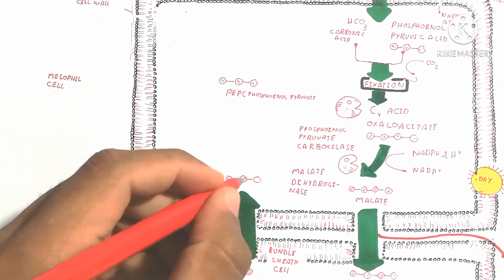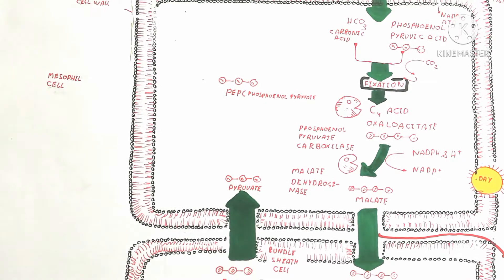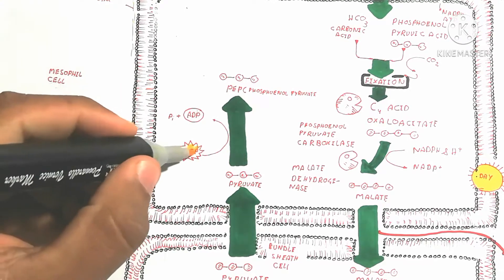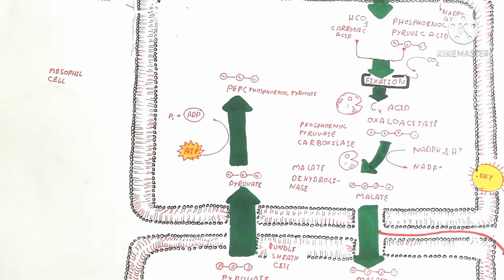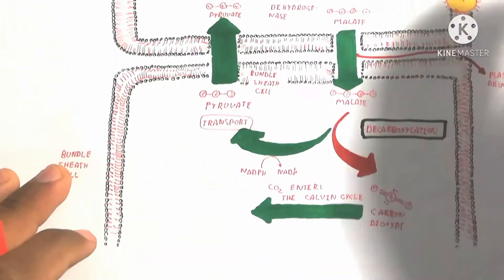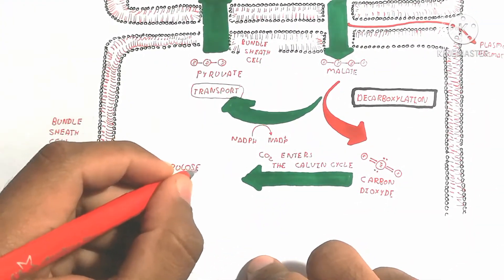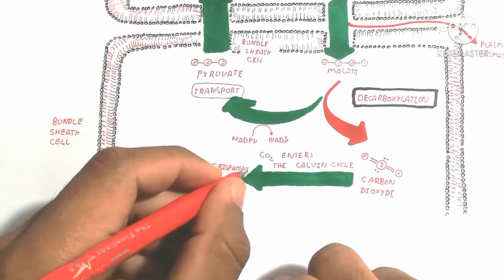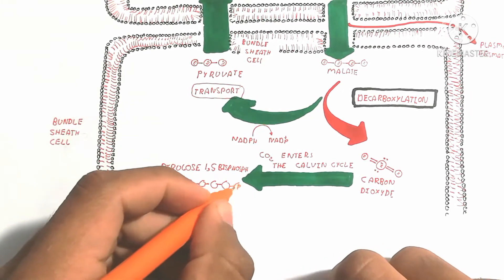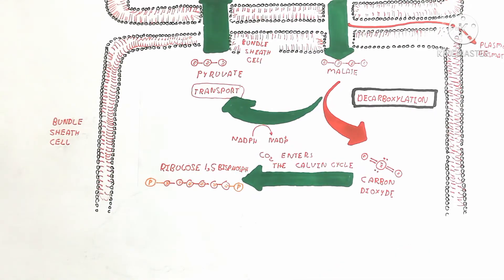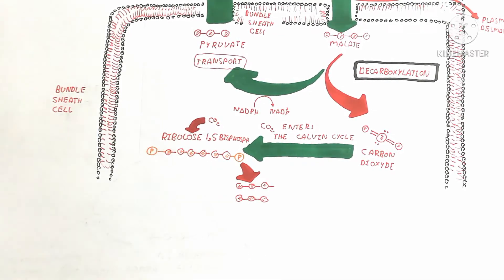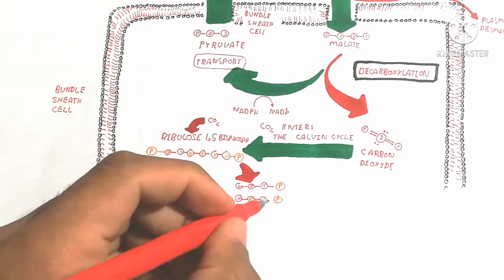The Calvin cycle uses the released carbon dioxide to make sugar. The pyruvate is converted back using ATP to regenerate phosphoenolpyruvate, and this cycle continues. Carboxylation occurs in the mesophyll cell and decarboxylation in the bundle sheath cell, and pyruvate is transported back to the mesophyll cell. The Calvin cycle operates in the bundle sheath cell.